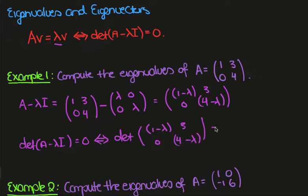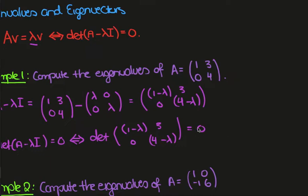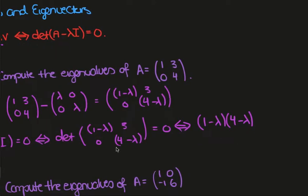The determinant of this matrix is given by (1 minus lambda)(4 minus lambda) equals 0. So in particular we see that the eigenvalues are equal to 1 and 4.